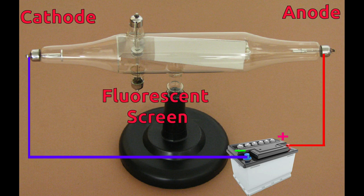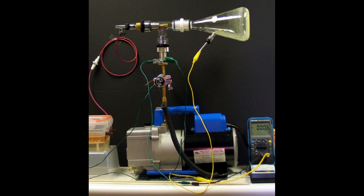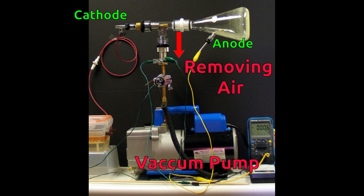A fluorescent screen is used to see the cathode rays. Fluorescent screens are helpful in seeing invisible moving particles. It absorbs invisible fast moving particles and emits light. Cathode ray tubes are connected to a vacuum pump. This pump sucks the gas out of the tube.